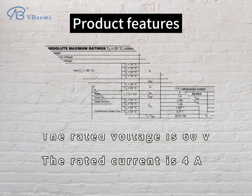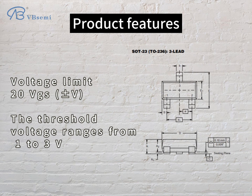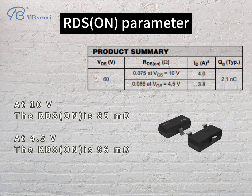Product features: the rated voltage is 60V, the rated current is 4A, voltage limit 20V GSV, the threshold voltage ranges from 1 to 3V. For the RDS(on) parameter, at 10V the RDS(on) is 85 milliohms, and at 4.5V the RDS(on) is 96 milliohms.